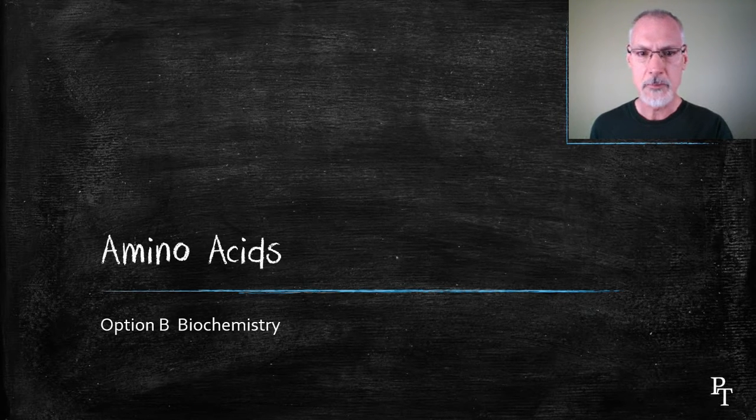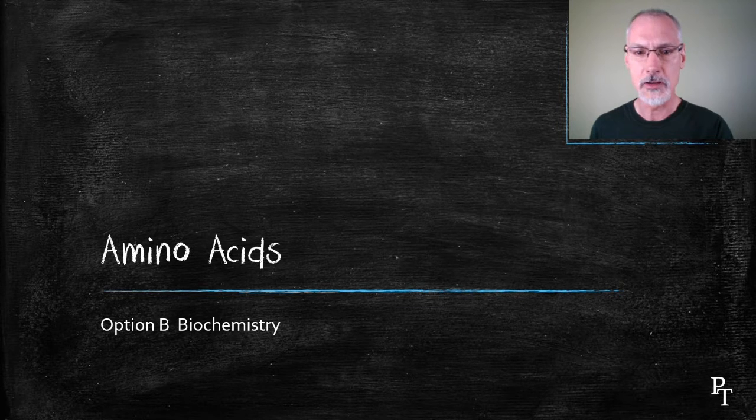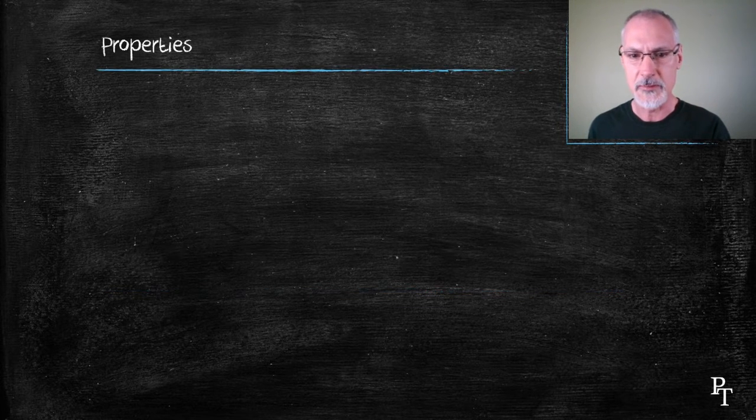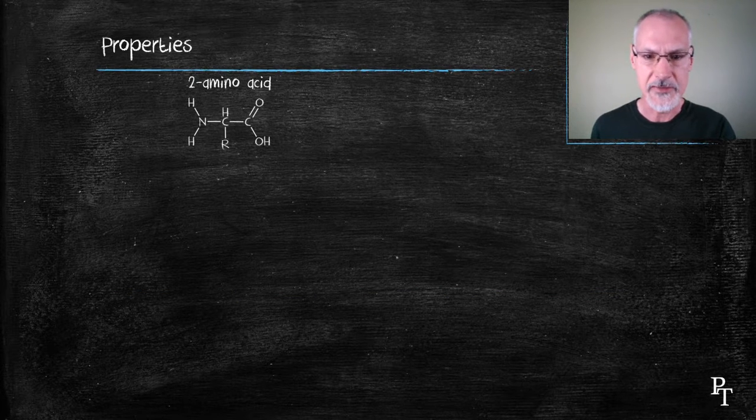Amino acids are a broad group of compounds that are used to assemble what are called proteins. Let's start by taking a look at the general structure of an amino acid, in particular, two amino acids.